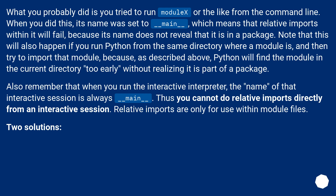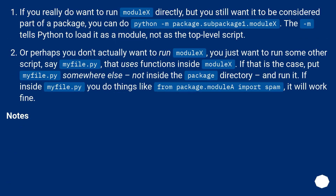Two solutions. If you want to run moduleX directly but still want it considered part of a package, use 'python -m package.subpackage1.moduleX'. The -m flag tells Python to load it as a module, not as the top-level script. Or, if you just want to run some other script like myfile.py that uses functions inside moduleX, put myfile.py somewhere outside the package directory and run it from there. Inside myfile.py, you can do 'from package.moduleE import spam' and it will work fine.